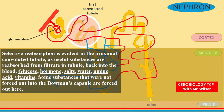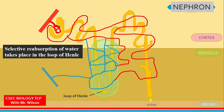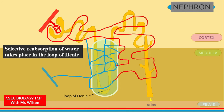There are several nephrons in the kidney connected to collecting ducts. Substances flow from the Bowman's capsule through the proximal convoluted tubule and then into the loop of Henle. Selective reabsorption of water takes place in the loop of Henle — only the amount of water that is needed will be reabsorbed; if it is not needed it will not re-enter the blood vessel.